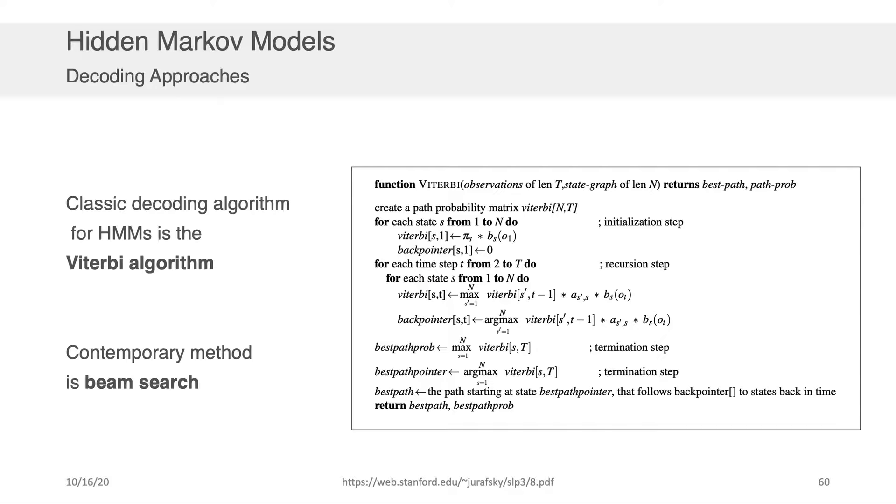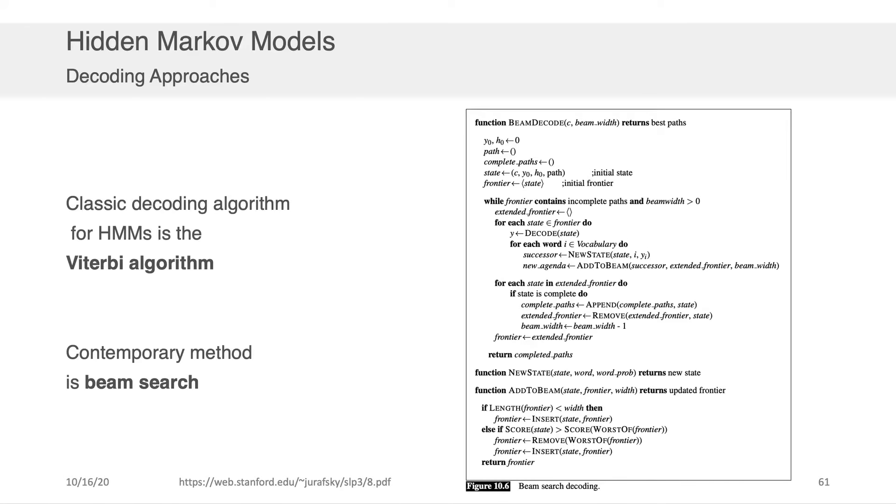Now the classical decoding algorithm for HMMs or hidden Markov models is the Viterbi algorithm. I've written the Viterbi algorithm implementation as documented in our textbook here on the slide. You can also find some excellent implementations of this publicly available on the web if you're interested in stepping through the code yourself. A contemporary version of this as well is called beam search decoding. So this is very similar to Viterbi algorithm with the exception that instead of searching a majority of the space, it searches a small subset of the state space when it wants to identify the optimal configuration.